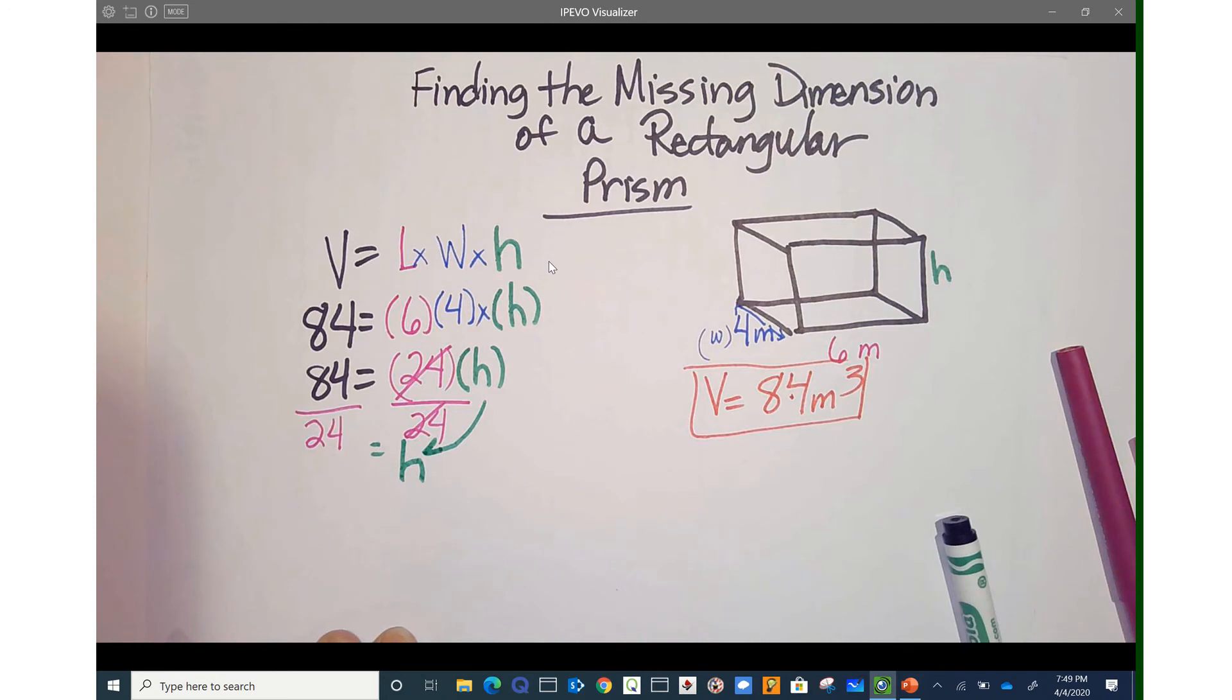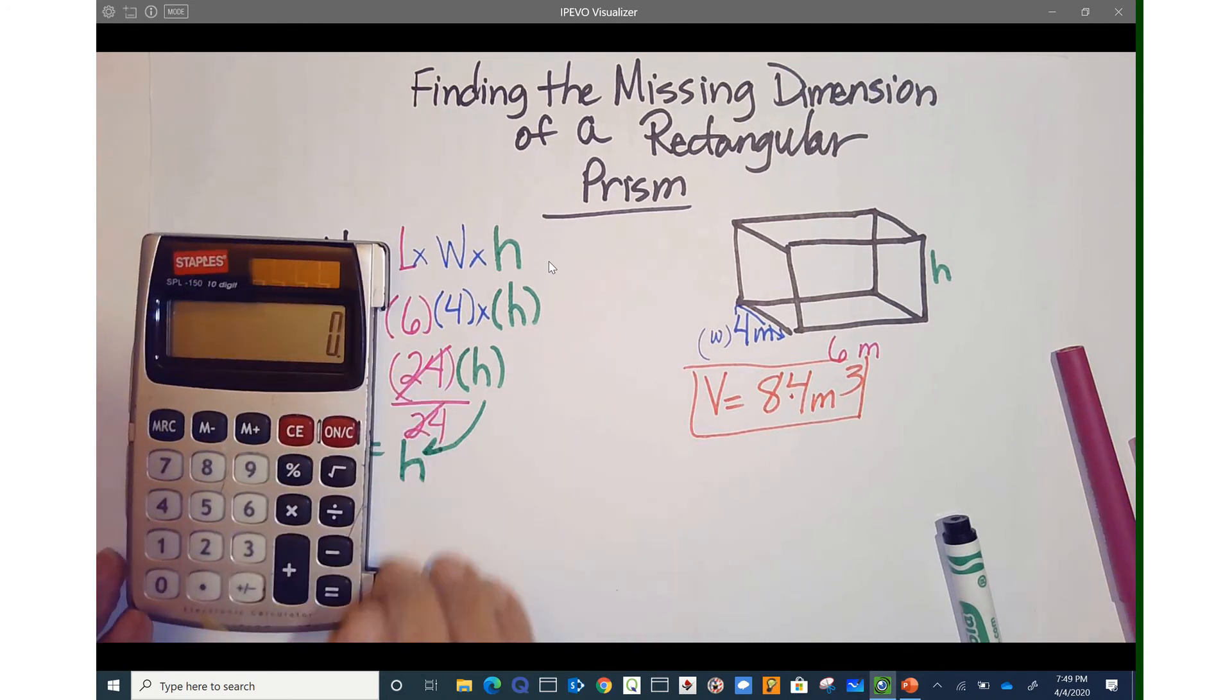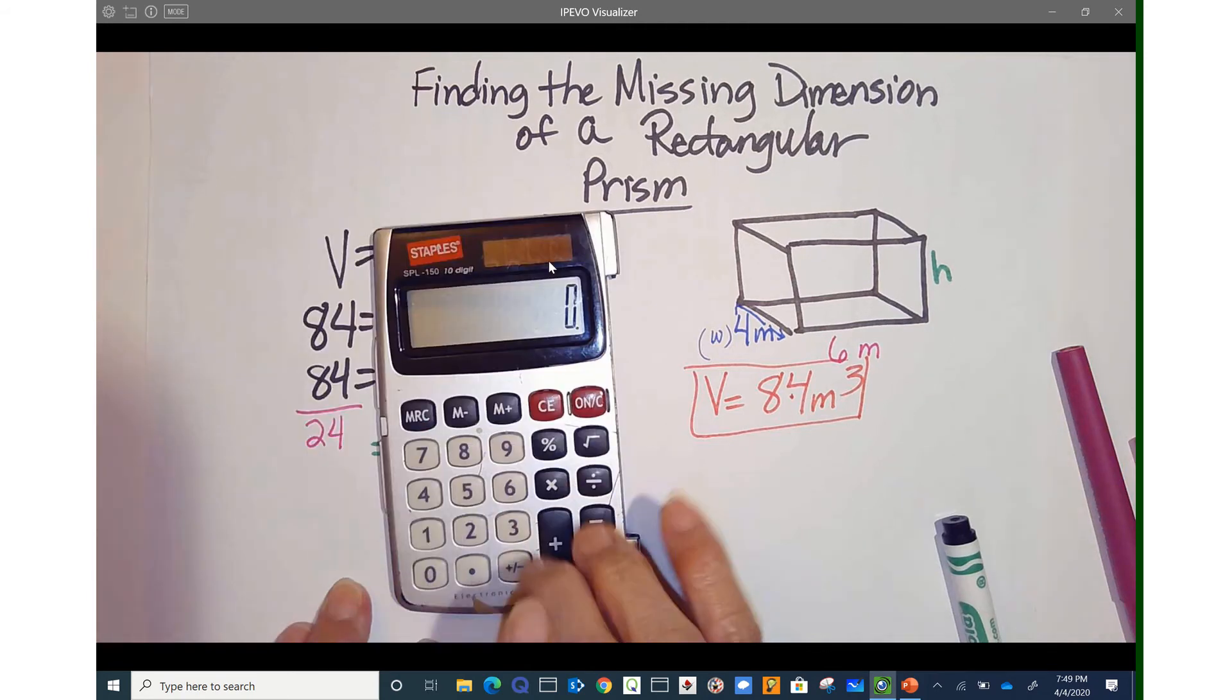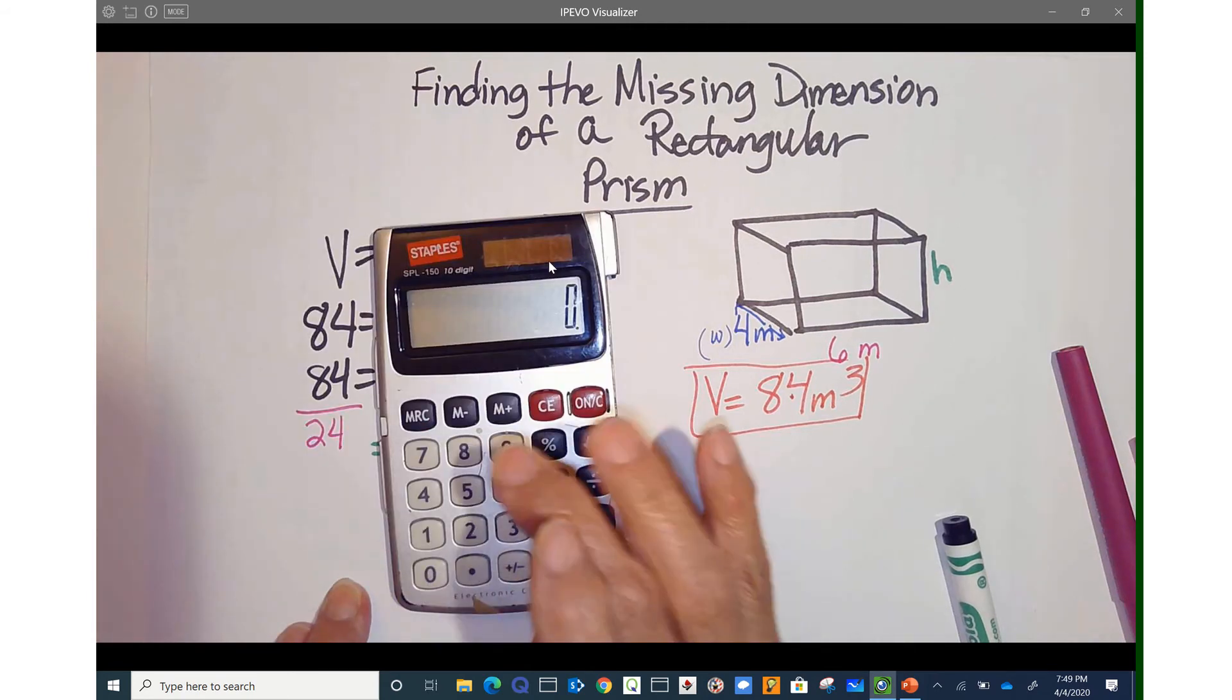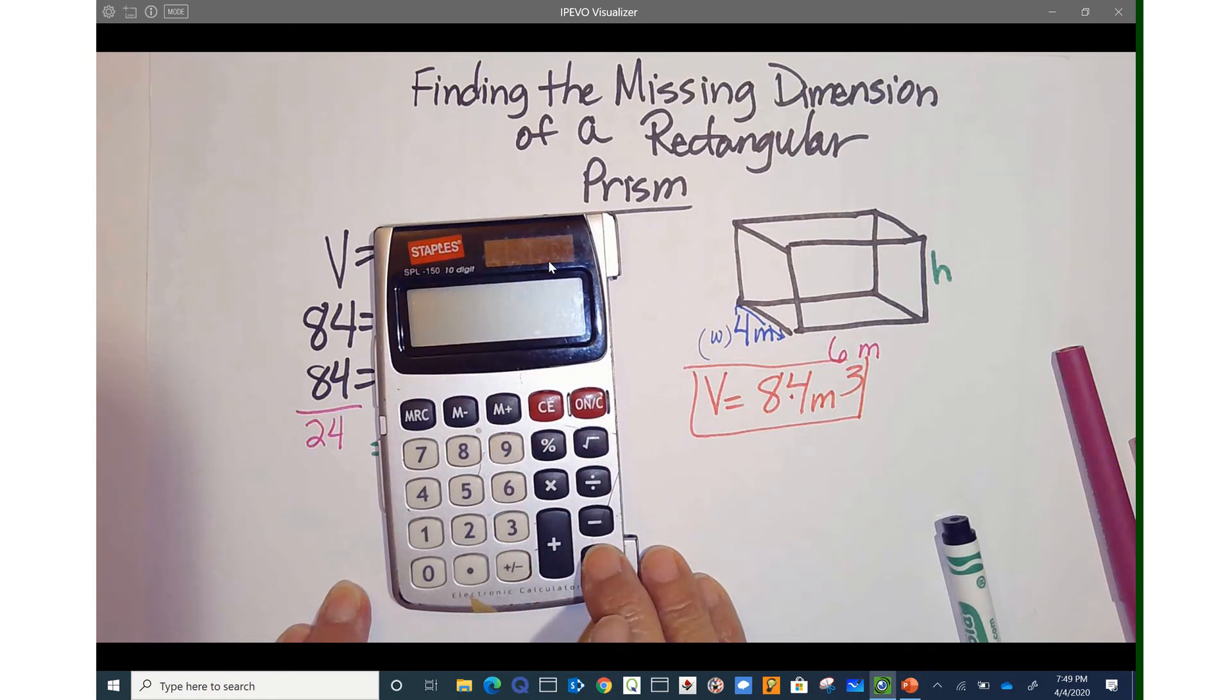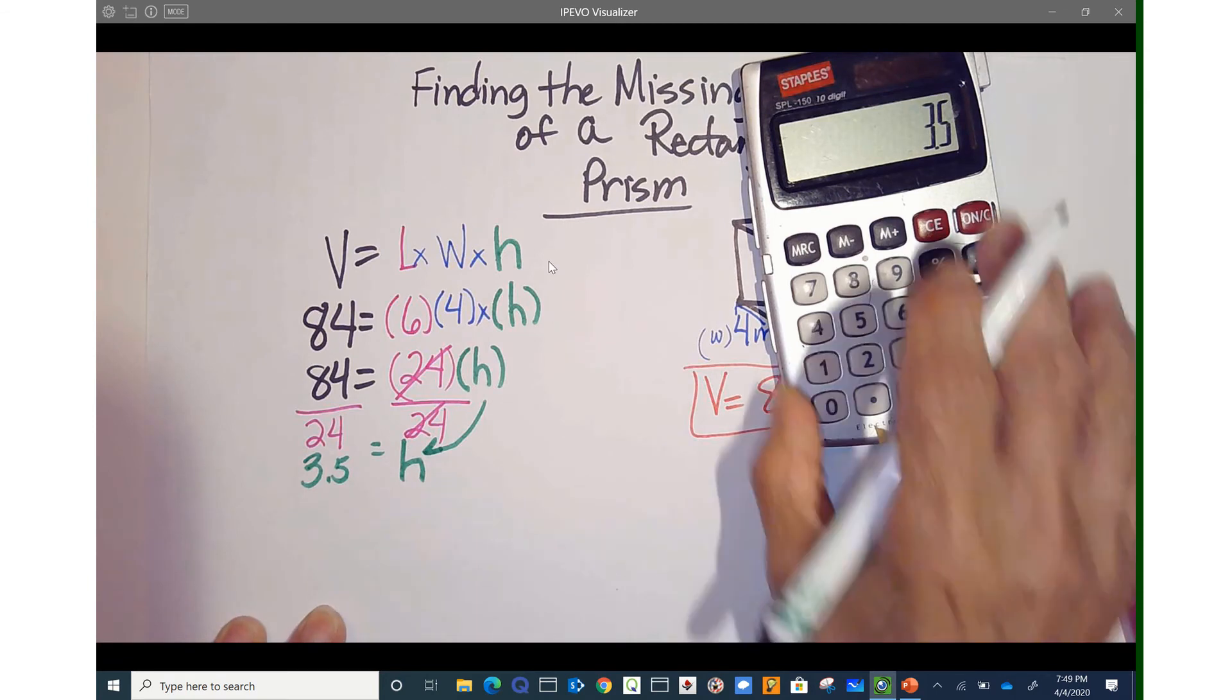I'm going to use my calculator. 24 divided into 84. 84 divided by 24 equals 3.5. So we're safe to say that my height is 3.5.